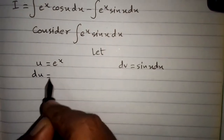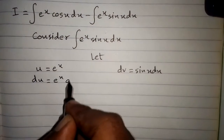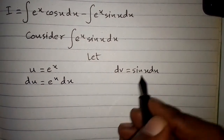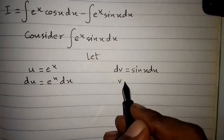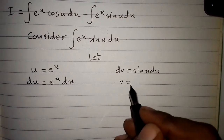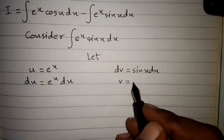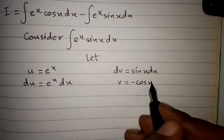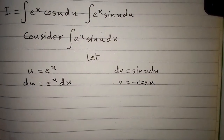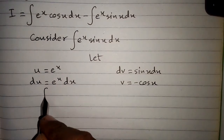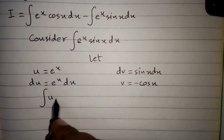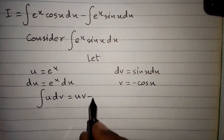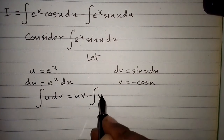So the differential du is equal to e to the power x dx. Integrating both sides to find v: the integral of sin x dx is minus cos x. The formula for integration by parts is: the integral of u dv equals u times v minus the integral of v du.